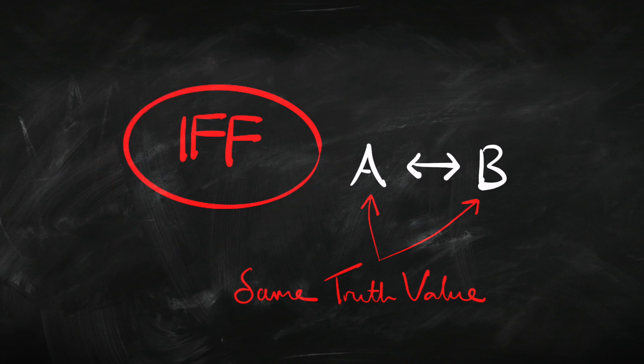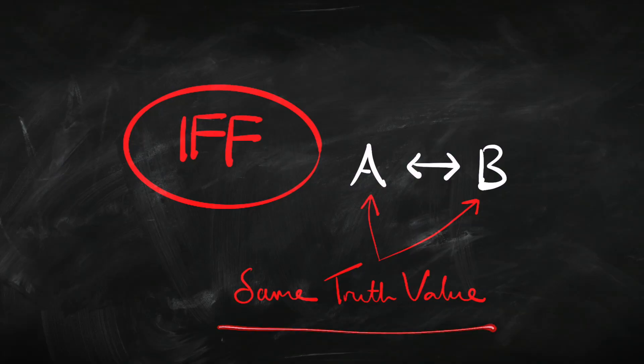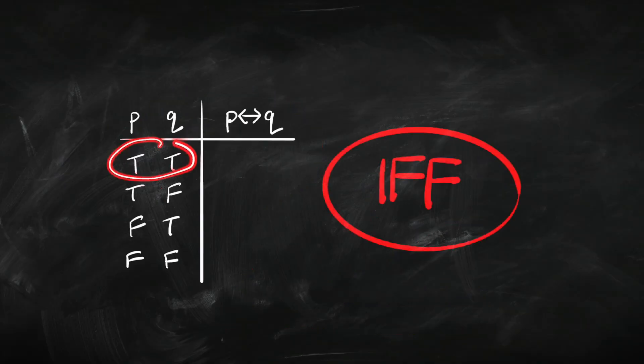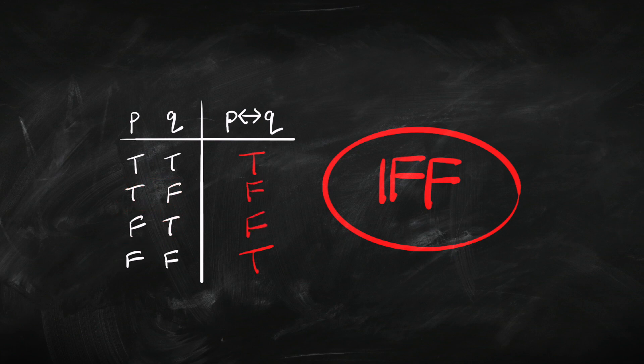Let's finally look at if-and-only-if. It's basically saying they have the same truth value. There are two ways that can happen: either they're both true or they're both false. So if they're both true or both false, 'P if and only if Q' will be true. But if they have a different truth value, then 'P if and only if Q' will be false. One thing we're going to discover later is that this is the same as saying 'if P then Q' and 'if Q then P' — we'll work that out later.